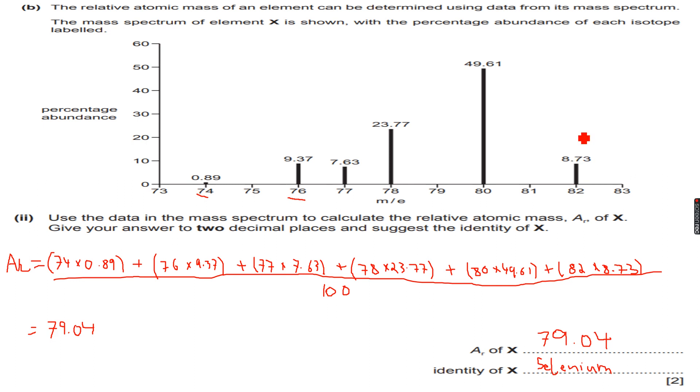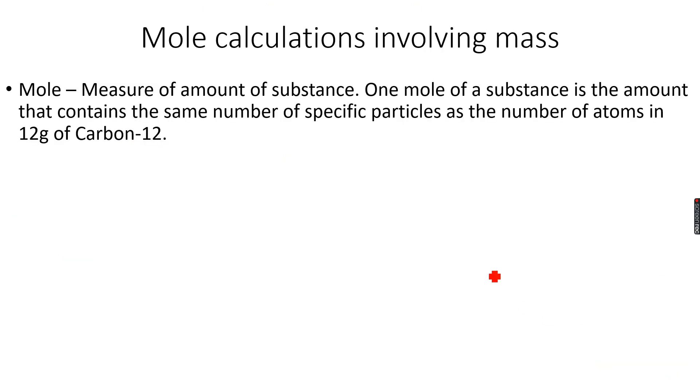In fact I think they would prefer if you write the chemical symbol. So we found that this element which has six isotopes with these isotopic masses and their respective relative abundances, when we calculated the relative atomic mass, it turned out to be selenium. So now let's move forward. We are going to do mole calculations.